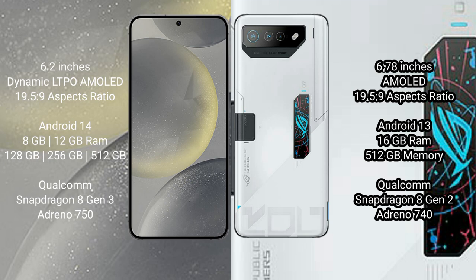The Samsung Galaxy S24 runs on the Android 14 operating system. The ASUS ROG Phone 7 Ultimate runs on the Android 13 operating system. The Samsung Galaxy S24 comes with 8GB or 12GB RAM, 128GB, 256GB, or 512GB internal storage, a Qualcomm Snapdragon 8 Gen 3 processor, and Adreno 750 GPU. The ASUS ROG Phone 7 Ultimate comes with 16GB RAM and 512GB internal storage.